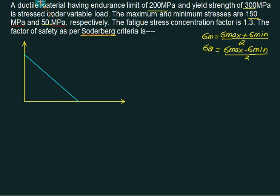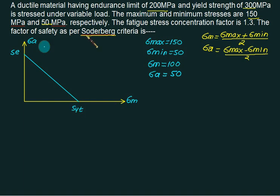That is Soderberg. And you need this value and this value equal to SE. This value you need as SYT. This is Sigma M. This one is Sigma amplitude. Max value was given to you. Maximum value was given as 150. Minimum value was given as 50. From this we can calculate Sigma mean value: 100. Use this formula and calculate. Sigma amplitude 50. And you have only one formula. What is SYT given? Endurance is given as 200, and this value was given as 300.